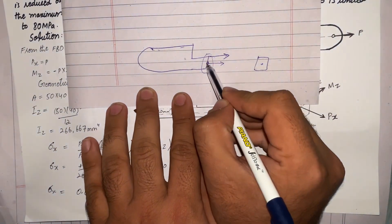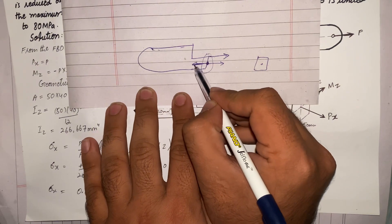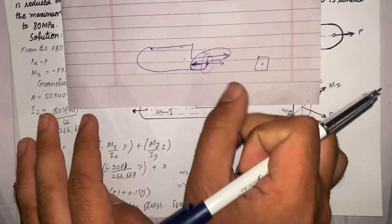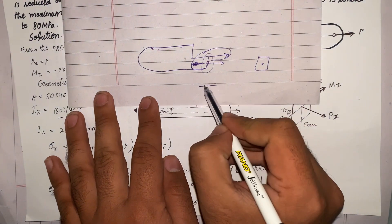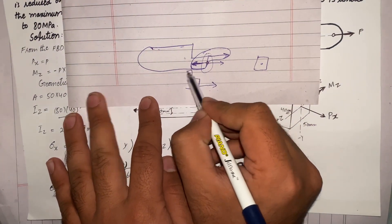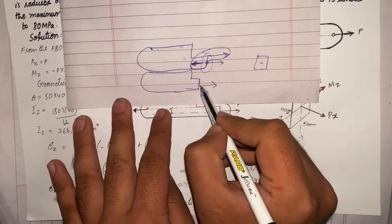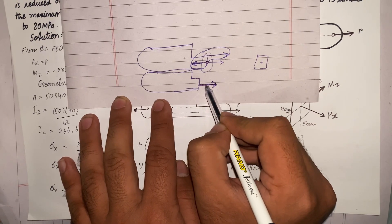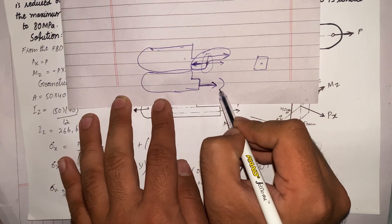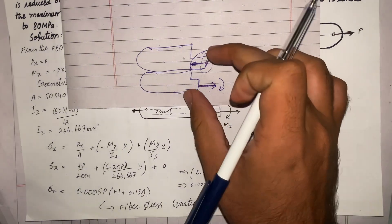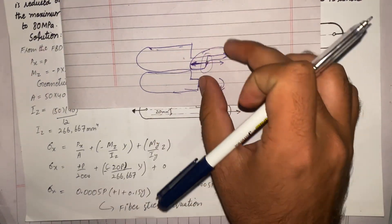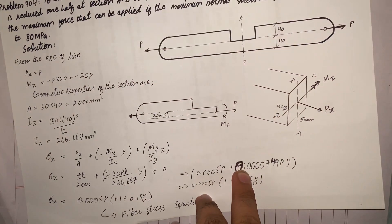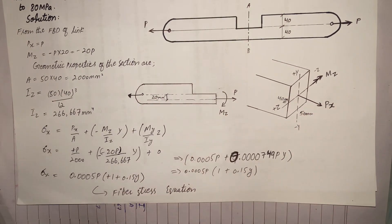When we move this force to the centroid location, we draw two forces equal and opposite in direction. These two forces will generate a couple — a clockwise couple. So when we change the position of the load from the top to the mid, it will be combined by a couple, and this couple rotates in the clockwise direction.